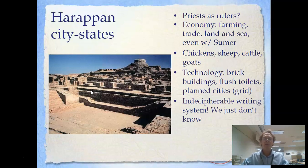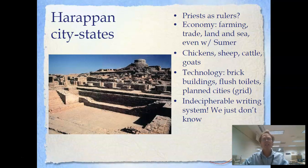The political organization of the Indus River Valley consisted of city-states, just like in Mesopotamia — unlike Egypt, which had a kingdom or empire. We really don't know very much about how these Harappan city-states were organized or led. We assume from the archaeological record that priests were rulers, but we just don't know.